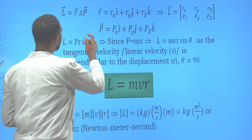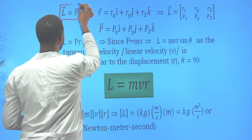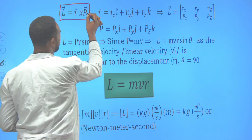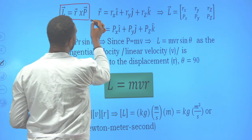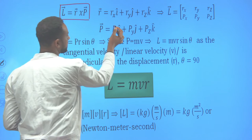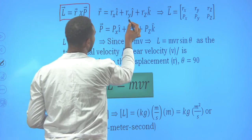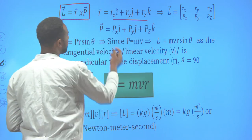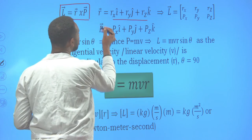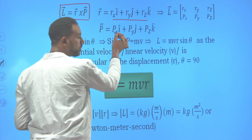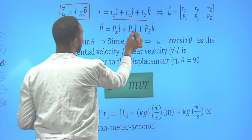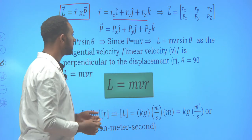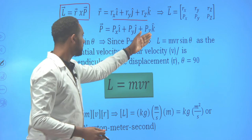Angular momentum can be vectorially expressed as r cross the linear momentum p. So r can be expressed in unit vector form: rx in i, ry in j, rz in k. This is the unit vector notation form. The momentum, since it is a vector quantity, can be expressed as px·i, py·j, and pz·k — the momentum components along x, y, and z.